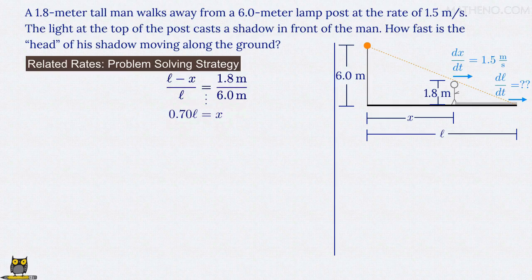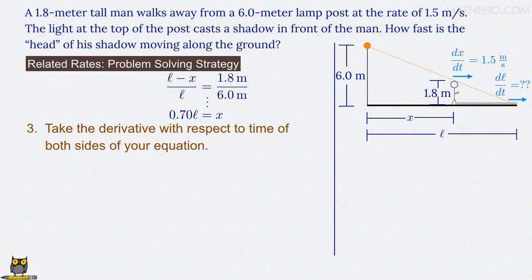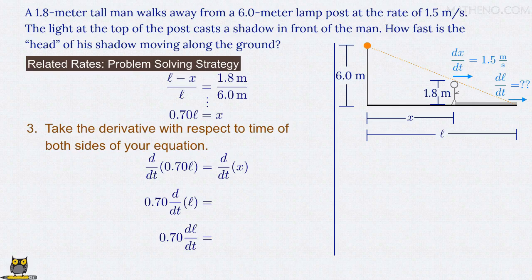And so we move on to step three. Take the derivative with respect to time of both sides of our equation. Starting with the left-hand side, we have d/dt of 0.70l, and that equals d/dt of x. Now on the left, we can pull 0.70 out of the derivative, since that's a constant. And so we have 0.70 times d/dt of l. But that quantity is the rate dl/dt, the quantity we're looking for.